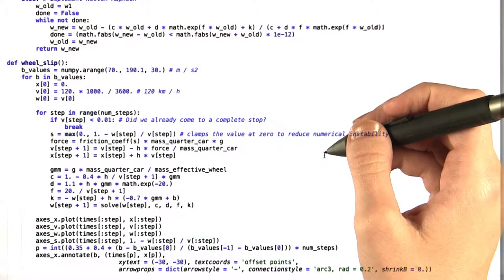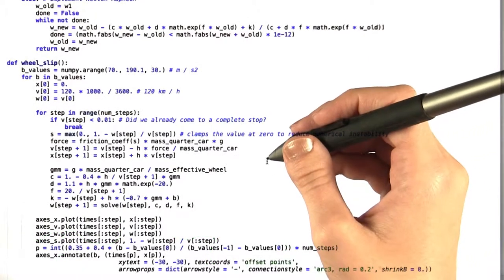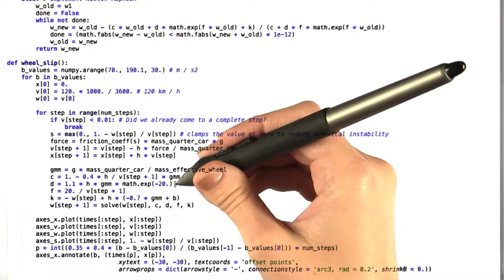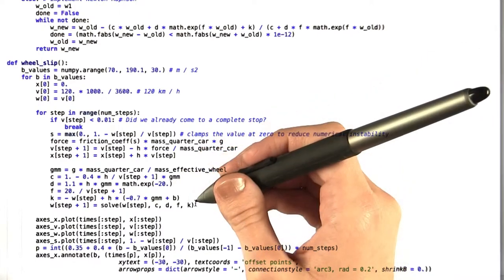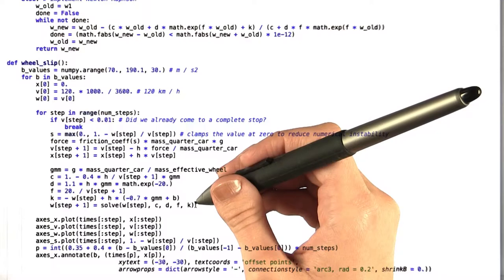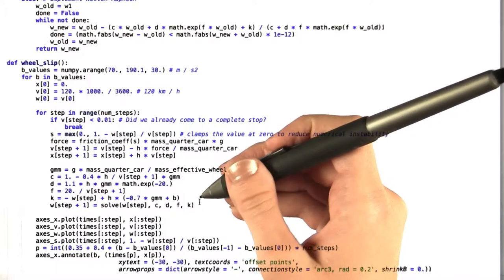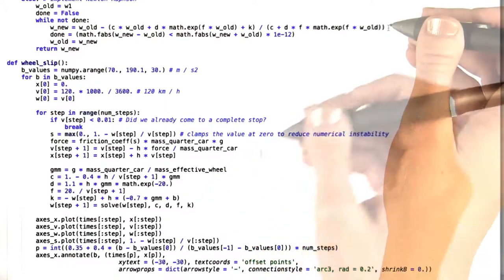In order to implement the backward Euler method in the code now, all we have to do is translate the variables c, d, f, and k into code, just like I've done right here. Now the expression for w that the solver is going to output is equivalent to the one that we just found using the backward Euler method.